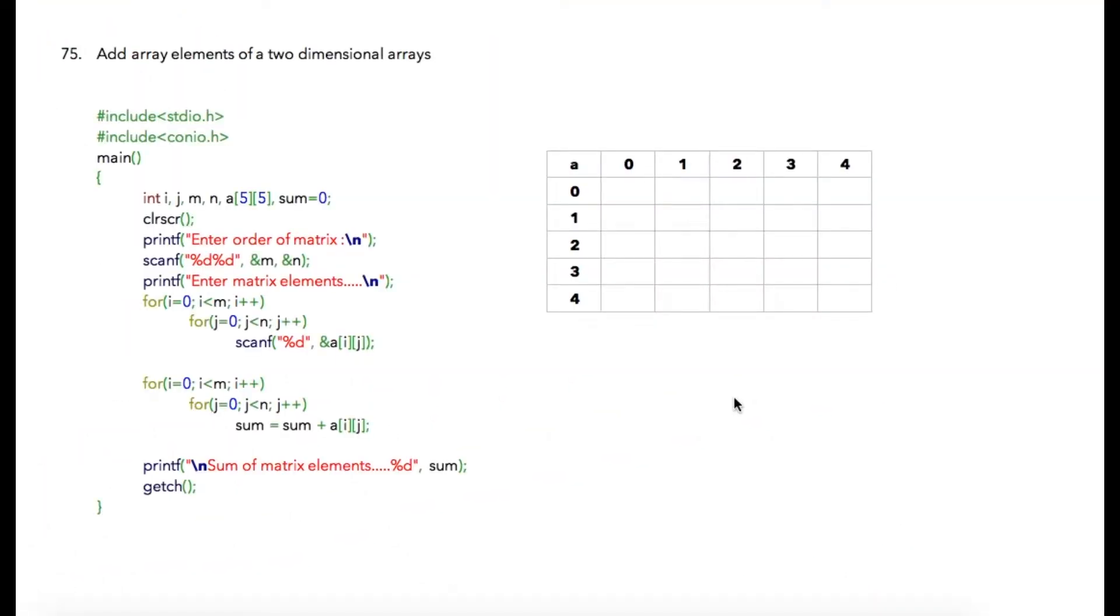In the next program we are going to add array elements from a given two-dimensional array. I'm using a five by five matrix. In addition to it, I'm going to initialize a variable as sum which will be used to store sum of all the array elements.